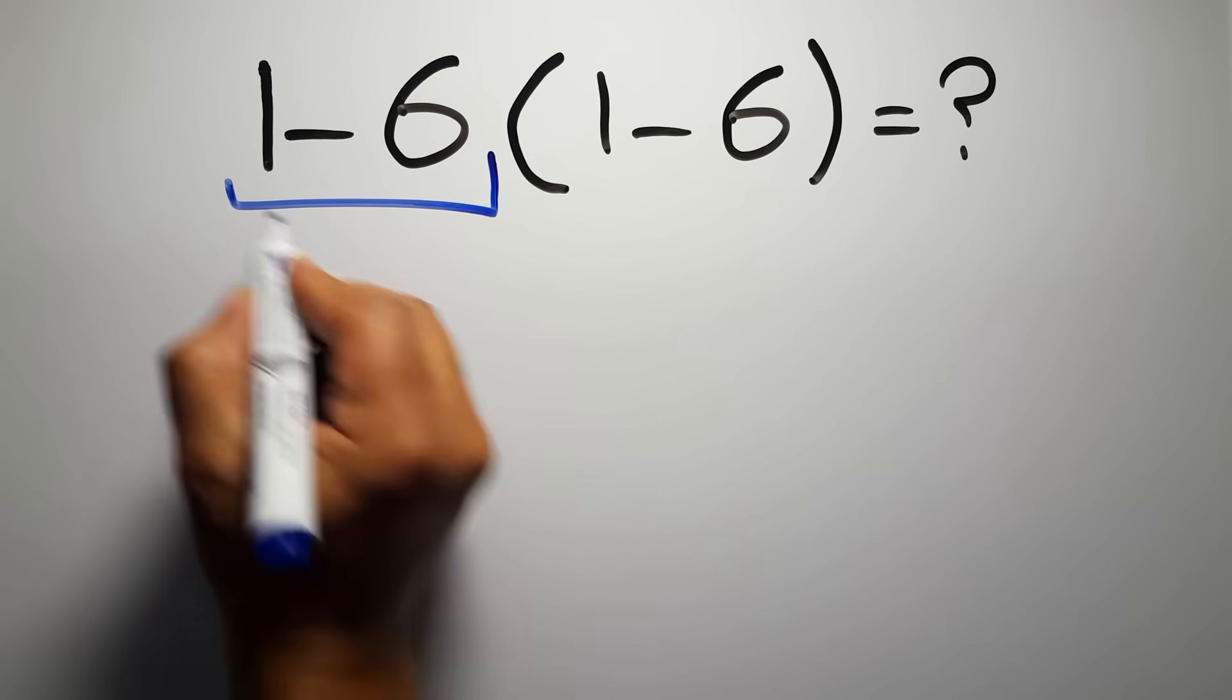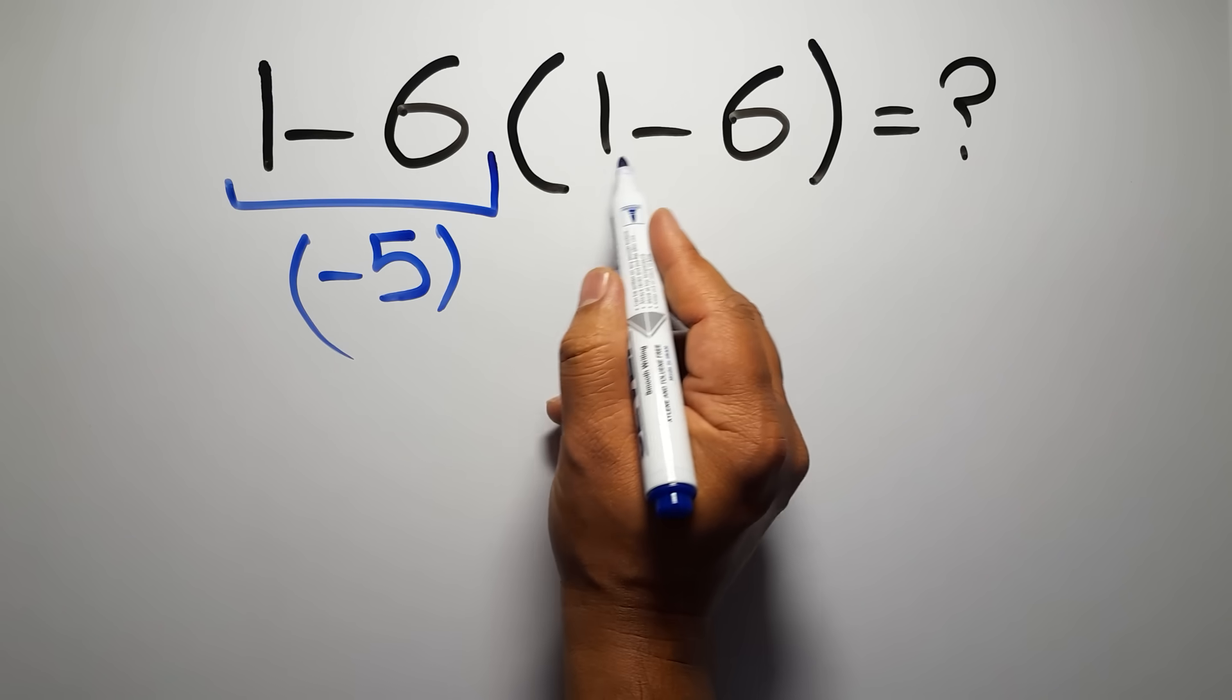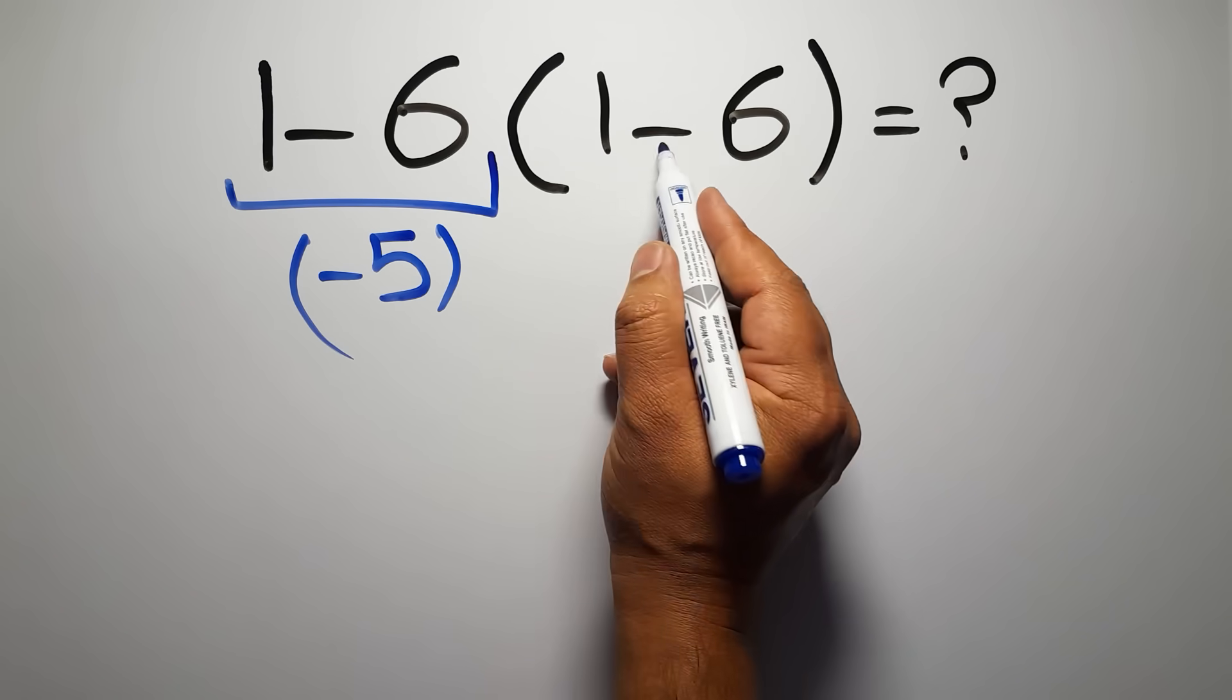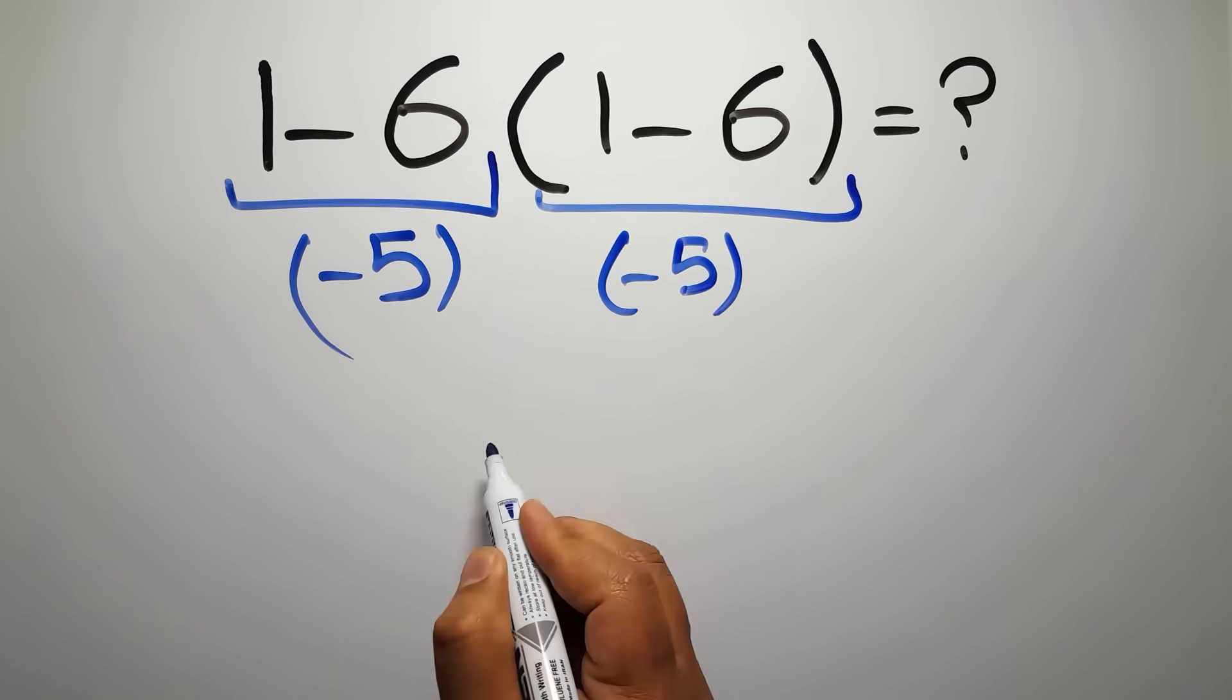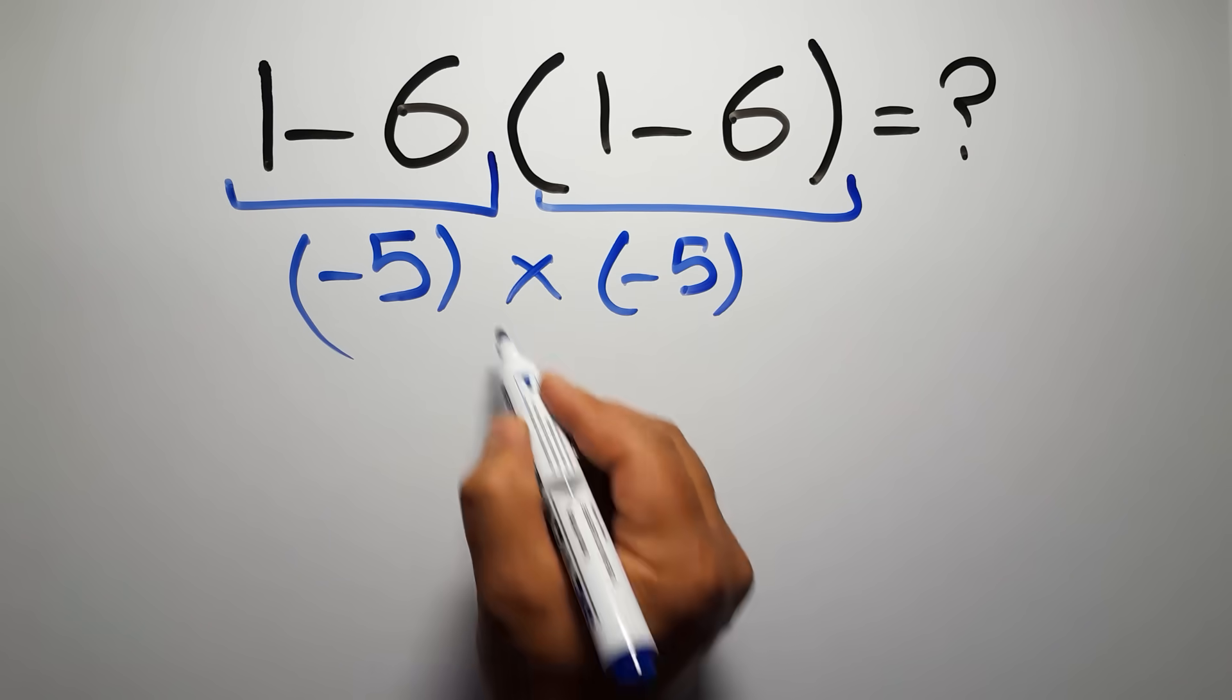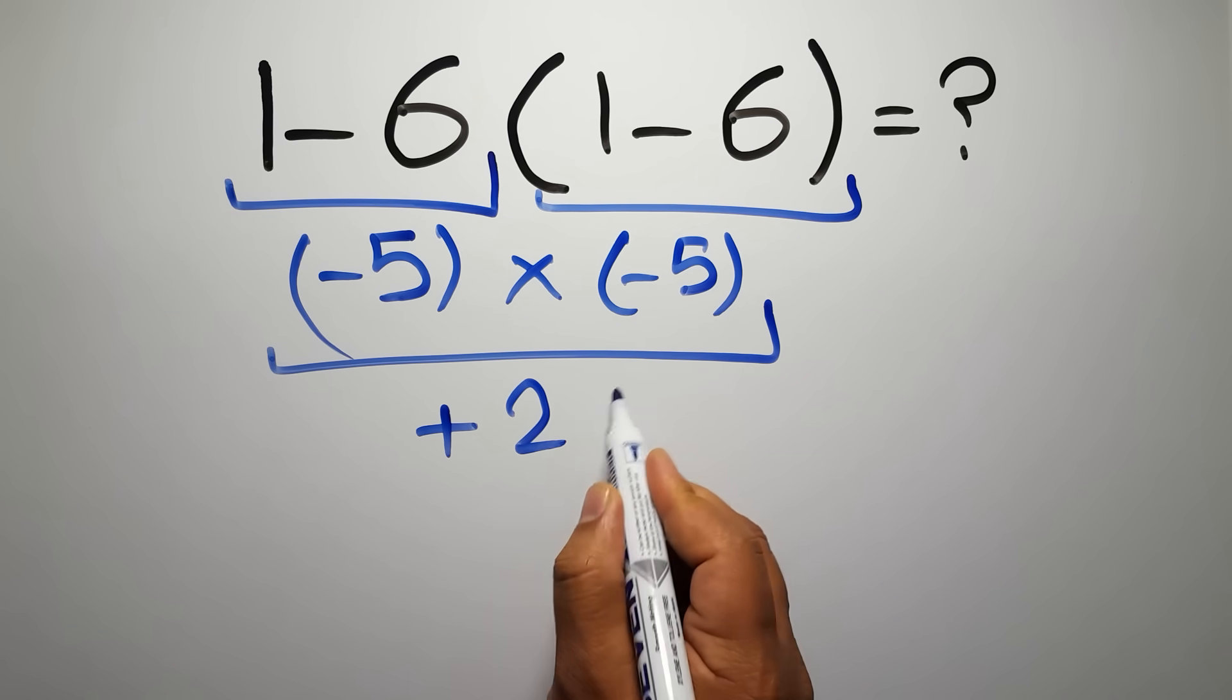1 minus 6 gives us negative 5, and again here inside this parentheses we have 1 minus 6, so negative 5 times negative 5 gives us positive 25.